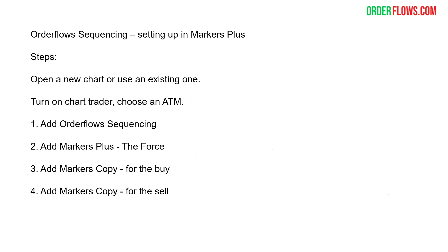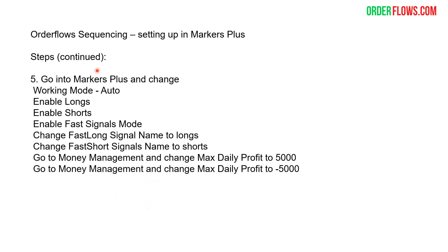The instructions can be found in the description below and it's just very easy steps. Open a new chart or use your existing one. Turn on the chart trader, choose your ATM, add OrderFlow sequencing. If it's not already there, add Markers Plus The Force. Then add two copies of Markers Copy — one for the buys and one for the sells. Then go in and set up the buy and sell copies.